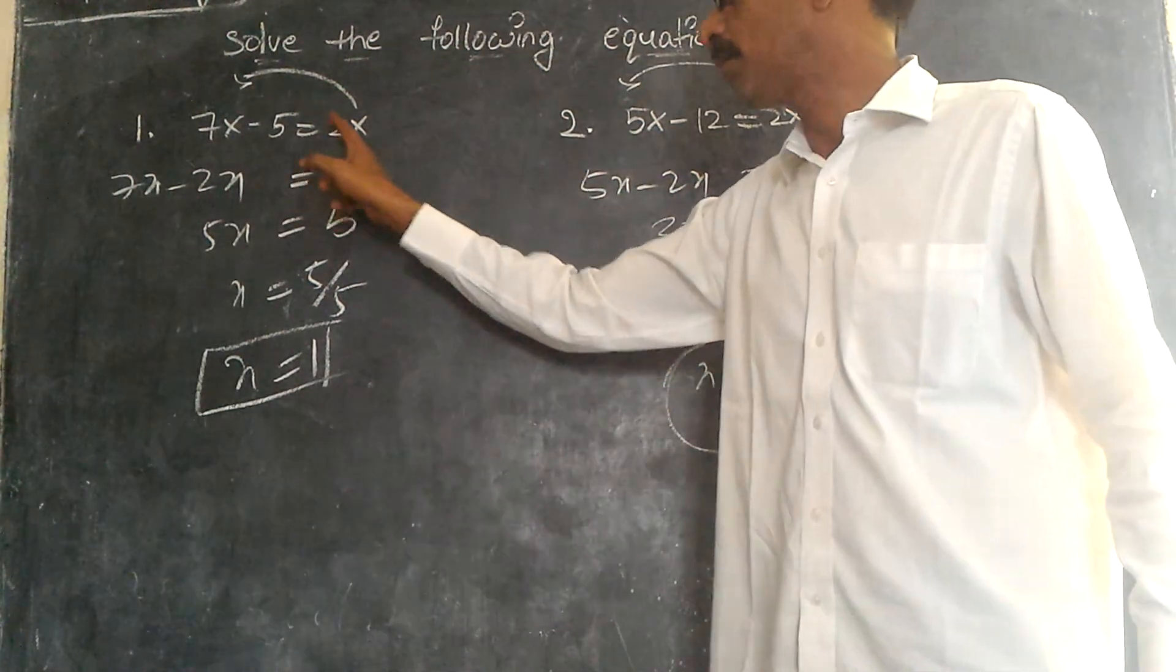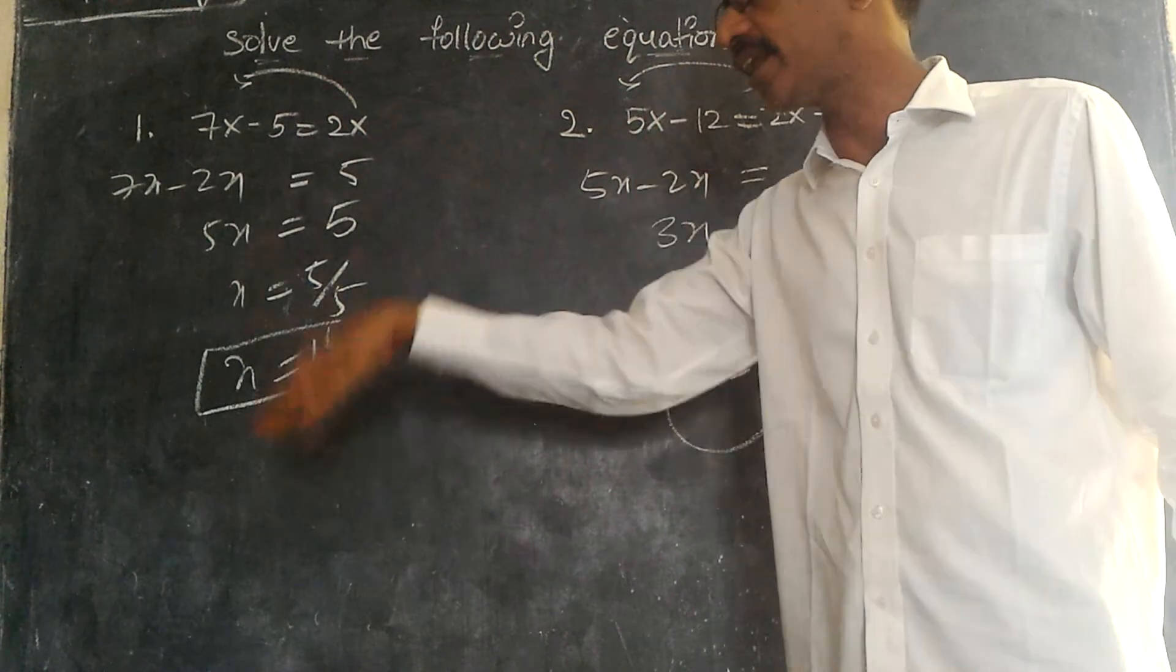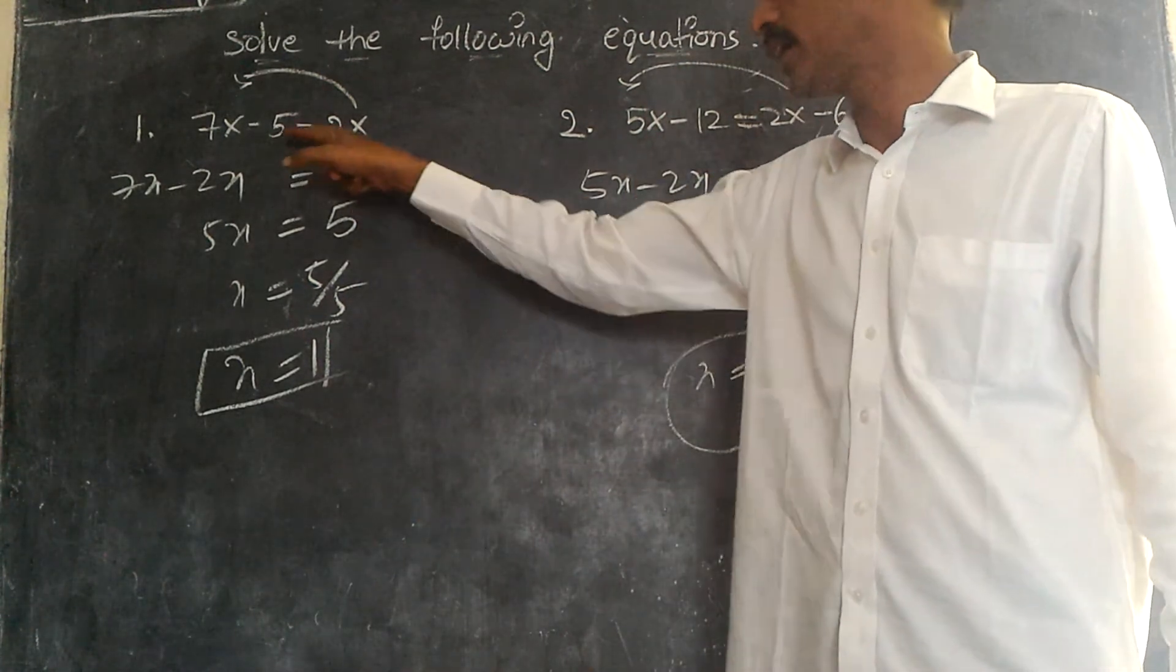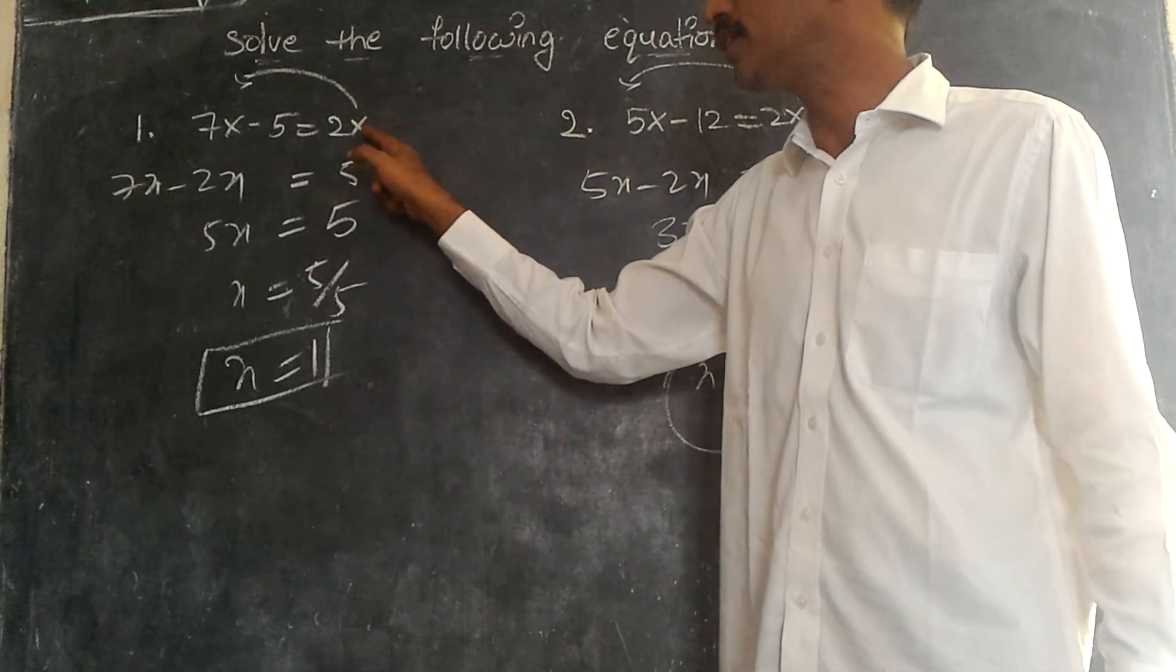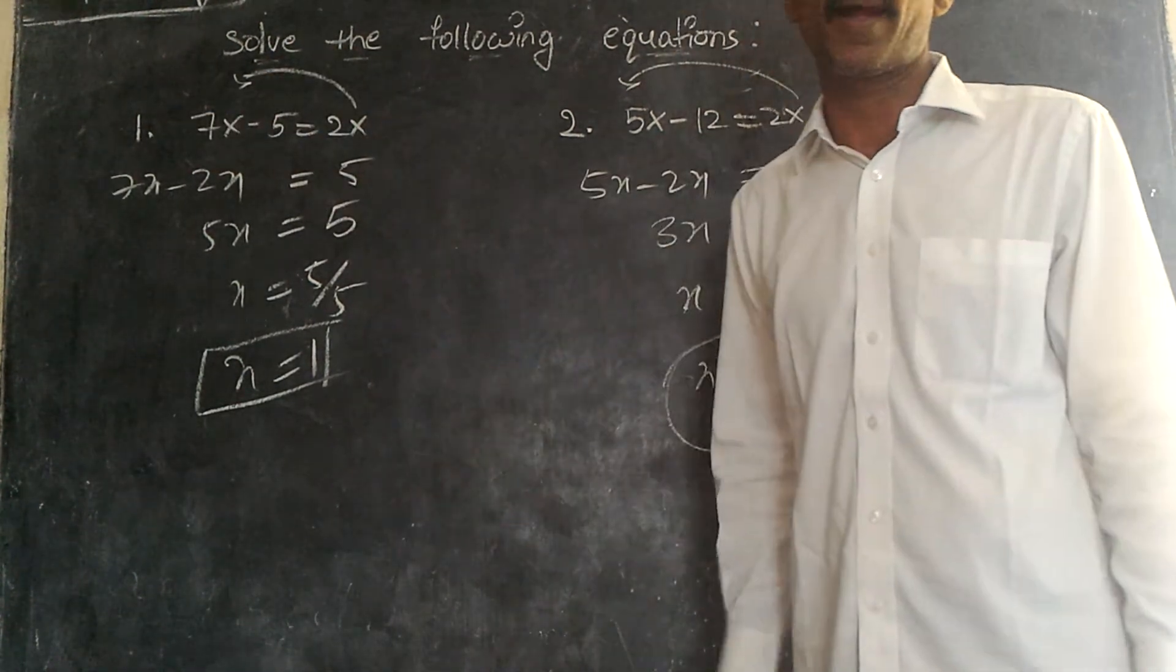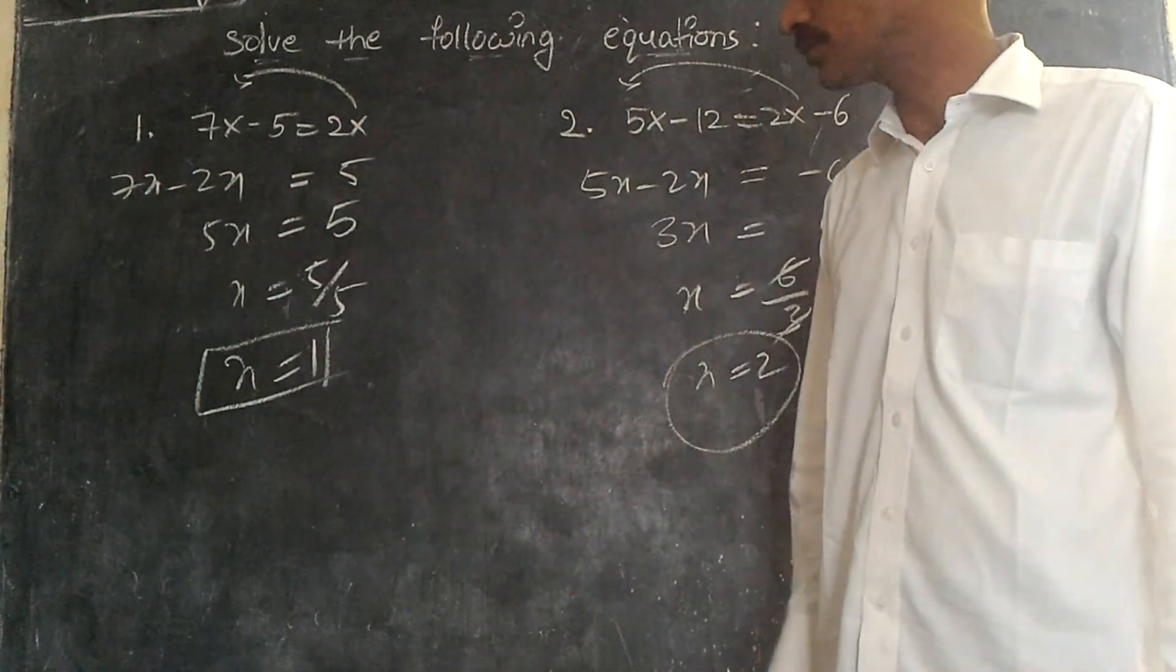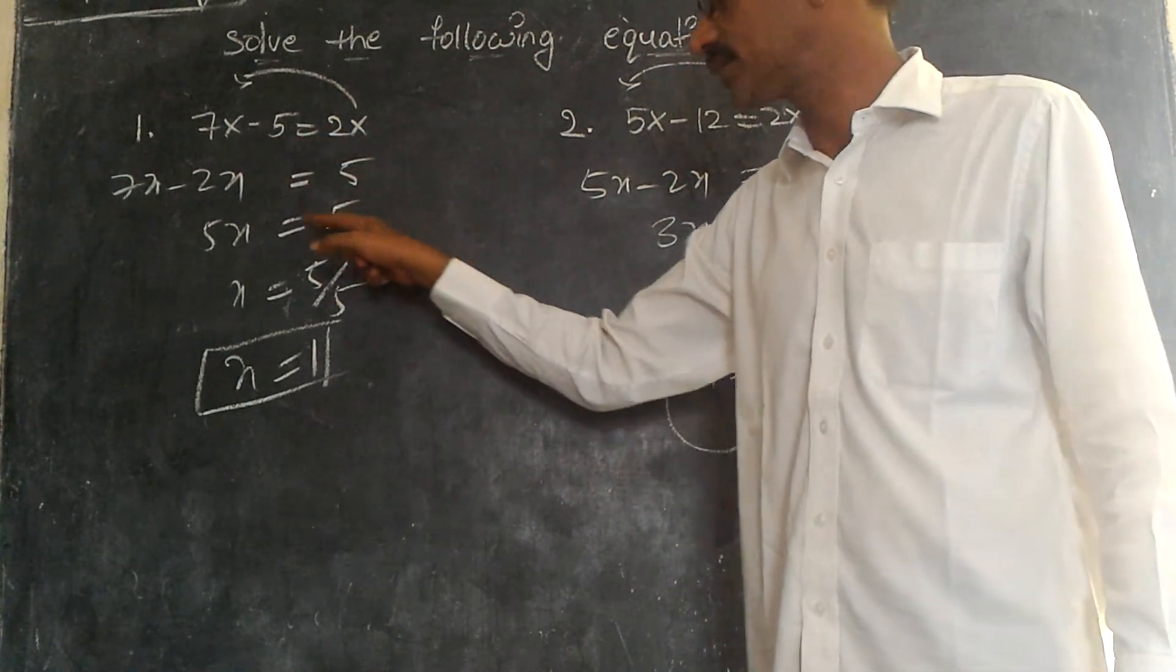Here the same thing. By transposing this, that means left hand side I have written variables, right hand side I have written constant. Here minus 5 go this side is plus. This is plus will go that side minus. So 7x minus 2x is 5x. Here what we have? 5. 5 we write it down as it is. 5 times x, 5 into x.